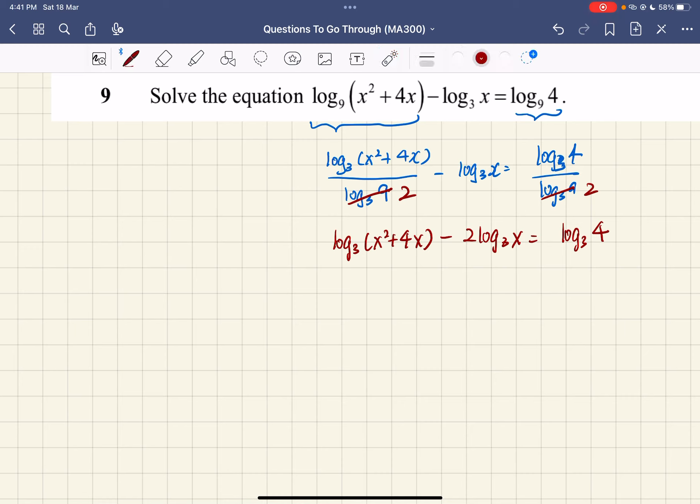Here, 2 log base 3 of x can be written as log base 3 of x squared. By reverse engineering the quotient law of logarithms, I can pack these two together and call it log base 3 of x squared plus 4x over x squared. The right hand side is log base 3 of 4.